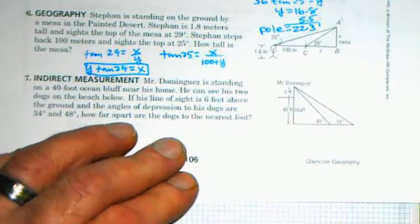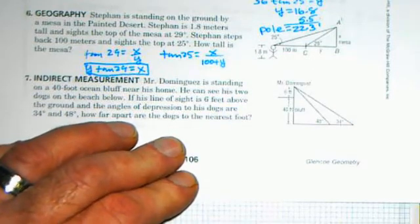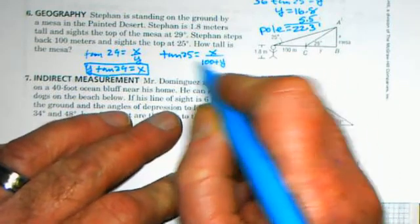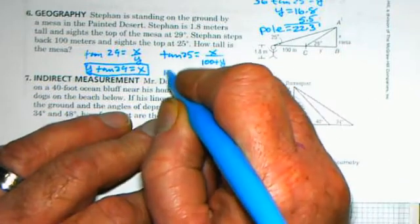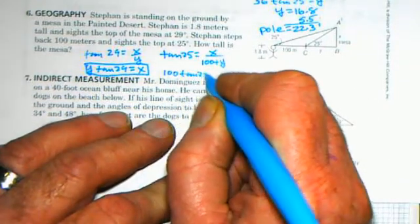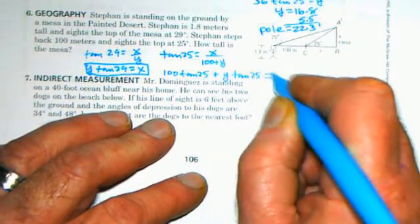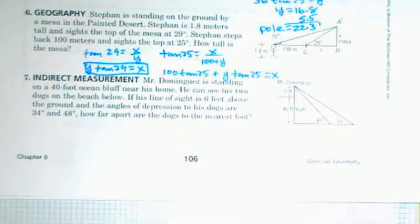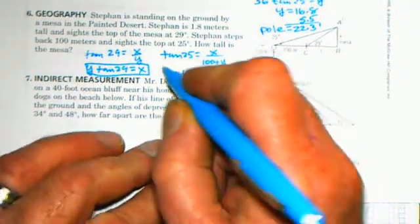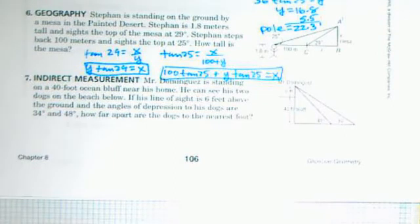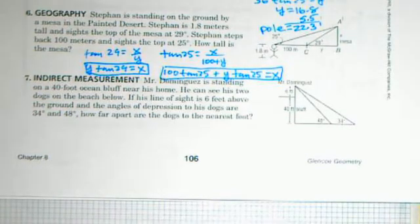Still a tangent ratio, this one is tan 25 is equal to x over 100 plus y. Now we can get that into x equals form by multiplying both sides by the denominator 100 plus y. So 100 times this plus y times this gives me 100 tangent 25 plus y tangent 25 is equal to x. So this is the relationship that we can get from the second triangle. Now since both of these are equal to x, I can set them equal to each other and solve for y.